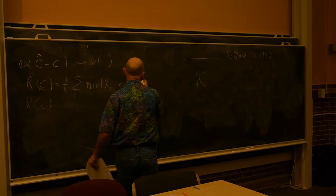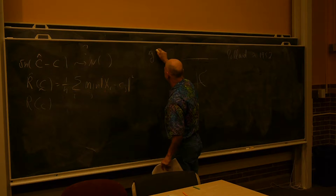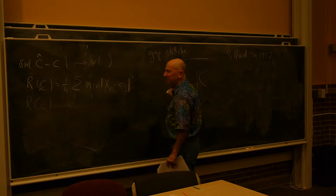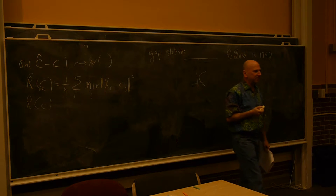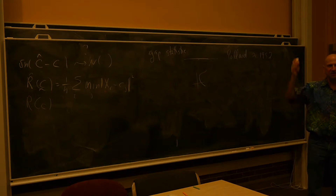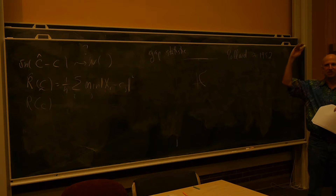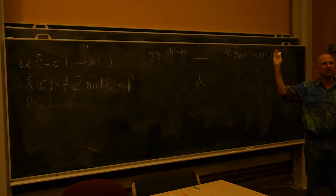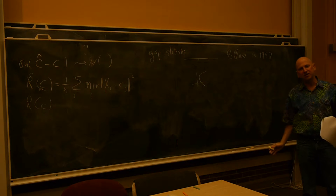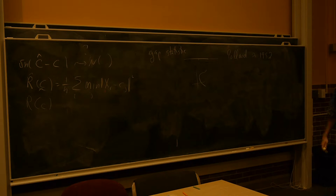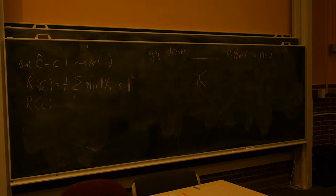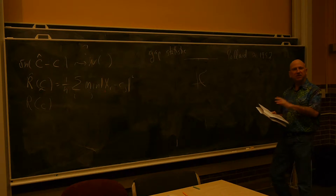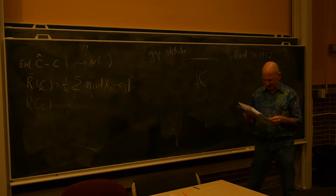There are other methods I didn't discuss, like the gap statistic, which is quite popular. I'm not a big fan because you have to put a large rectangle around the data and use a uniform distribution over it as the null. To me, that null distribution doesn't seem correct. So at some point, I just stopped — that's enough of these K selection methods.